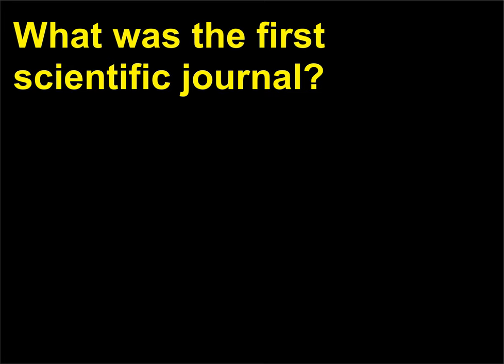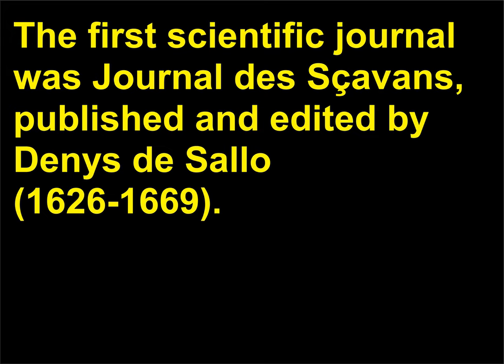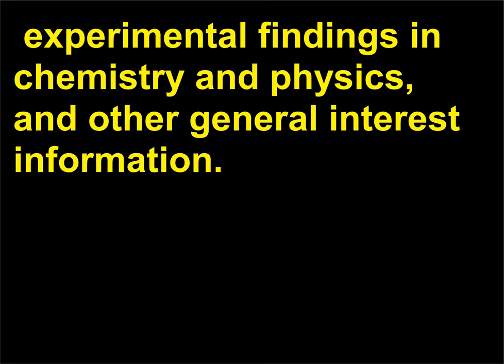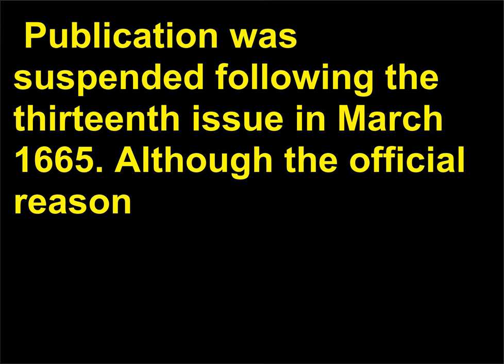What was the first scientific journal? The first scientific journal was Journal des Sçavans, published and edited by Denis de Sallo, 1626–1669. The first issue appeared on January 5, 1665. It contained reviews of books, obituaries of famous men, experimental findings in chemistry and physics, and other general interest information. Publication was suspended following the 13th issue in March 1665.